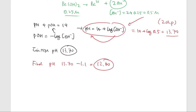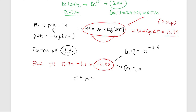The final pH of 12.60 tells us about the OH⁻ concentration. All we want is the OH⁻ concentration, so we need to figure out the pOH. Since pH + pOH = 14, pOH equals 1.4. Checking: 12.6 + 1.4 = 14. So the OH⁻ concentration equals 10 to the power of −1.4.